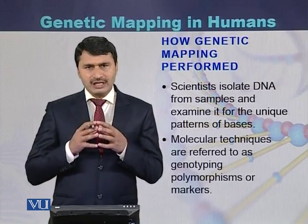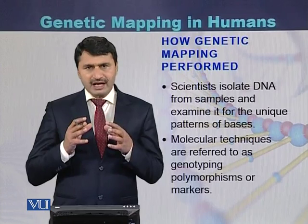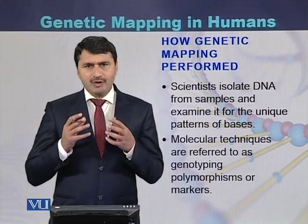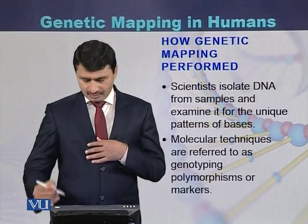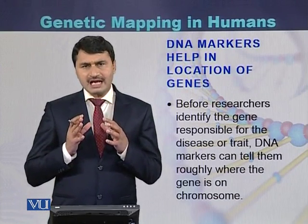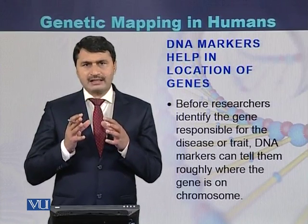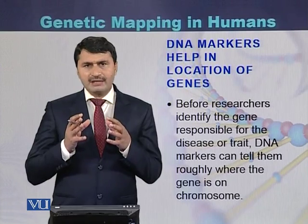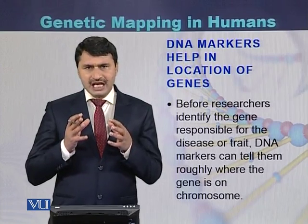Once they isolate the DNA, they use different molecular techniques to type the DNA. Once they type the DNA, they reach close to the region where the disease gene is located. Before reaching the disease gene, scientists use genetic markers to get an idea of the rough location of that gene. This is performed with the help of genetic markers.